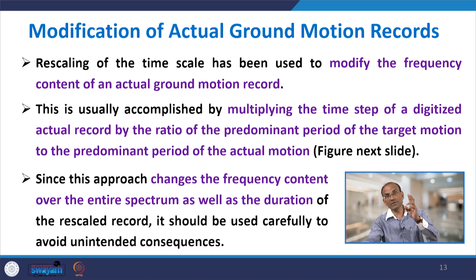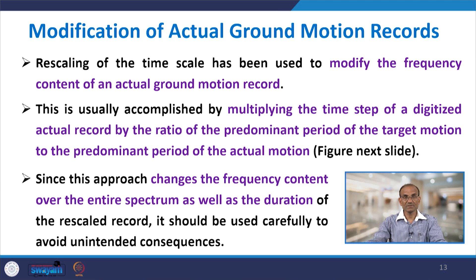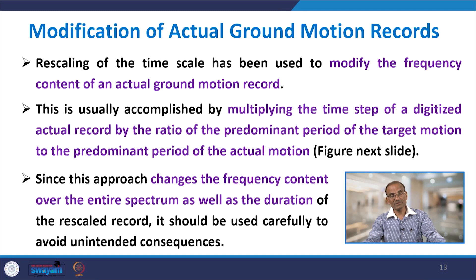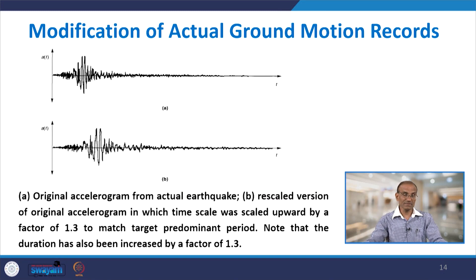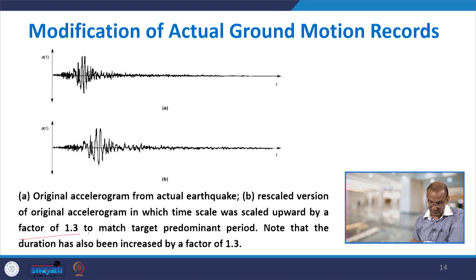This is accomplished by modifying the time step of a digitized actual record, where the ratio of the predominant period of the target motion to the predominant period of the actual motion is used — the actual record is multiplied by this ratio. Since this approach changes both the frequency content and the duration of the rescaled record, it should be used carefully. An example is given where the original accelerogram is rescaled with time scaled upward by a factor of 1.3.